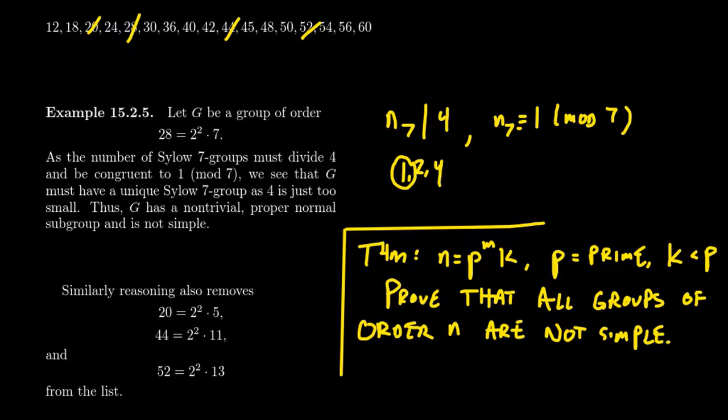And so I want you to be aware that this is the situation we're in so far. Like if you look at 28, this is our number k, this is our number p to the m, it's actually just p to the first. Seven is so much bigger than the rest of it, k, that there's just no other possibility. Same thing. Five is bigger than four. 11 is bigger than four. 13 is bigger than four. Now in this situation, that's how we ruled out those numbers.